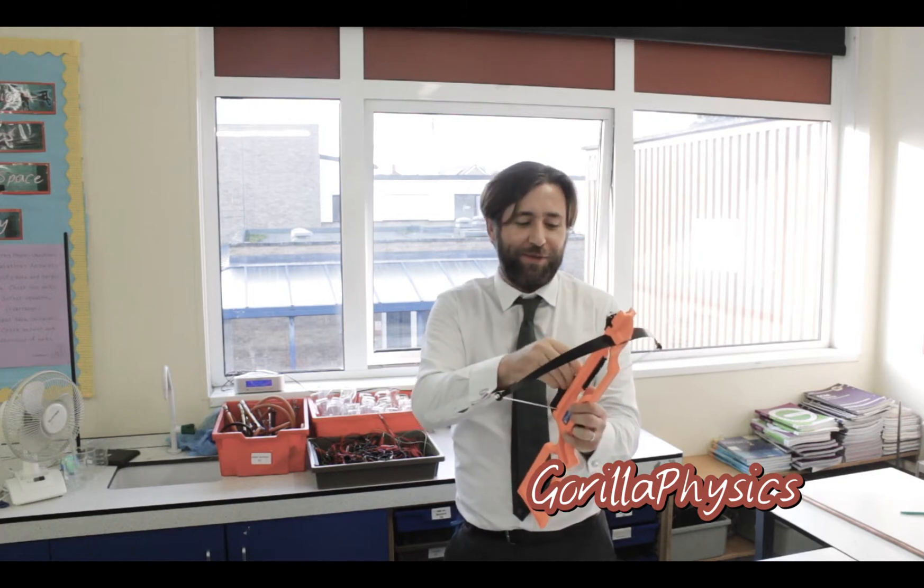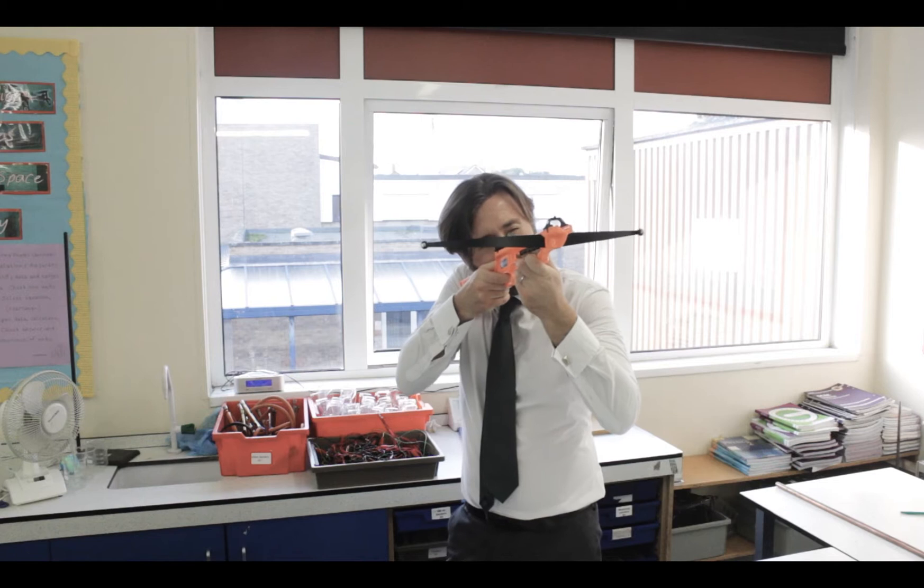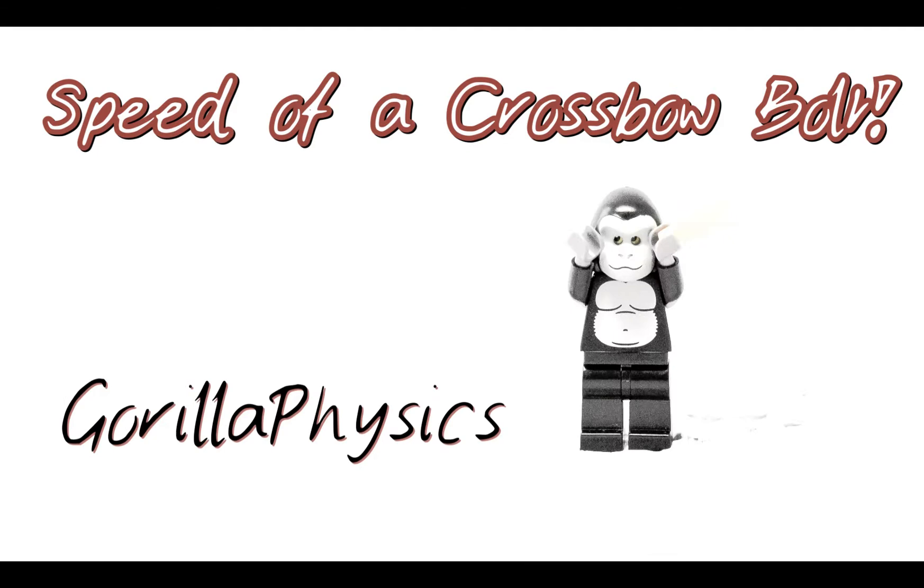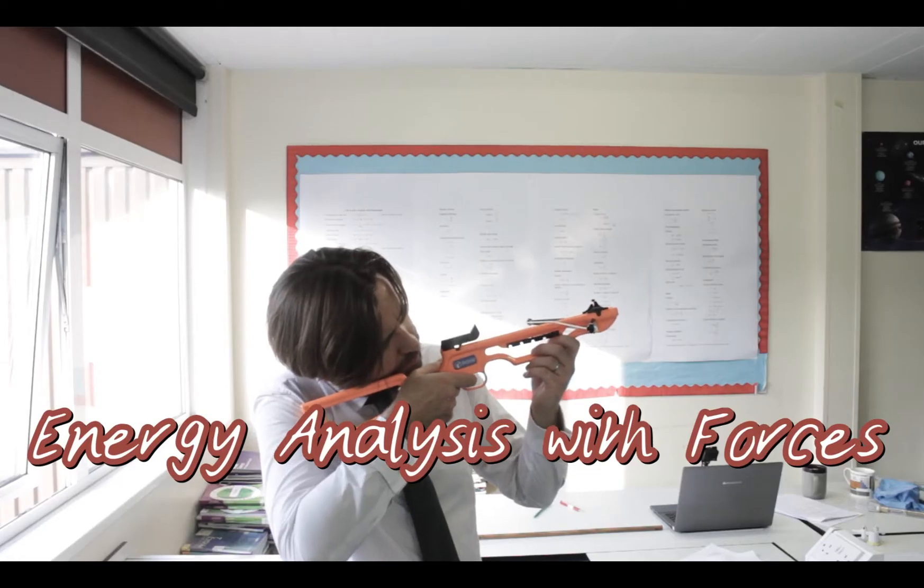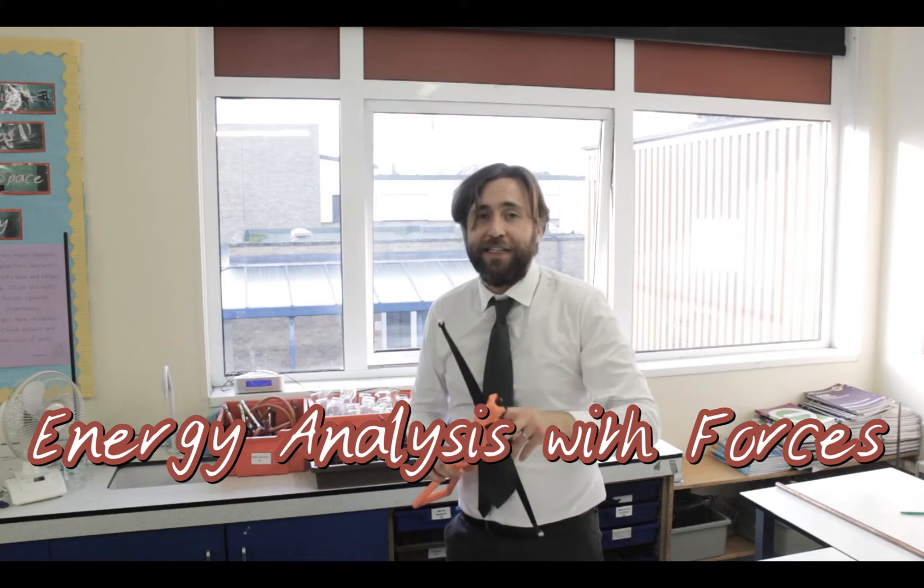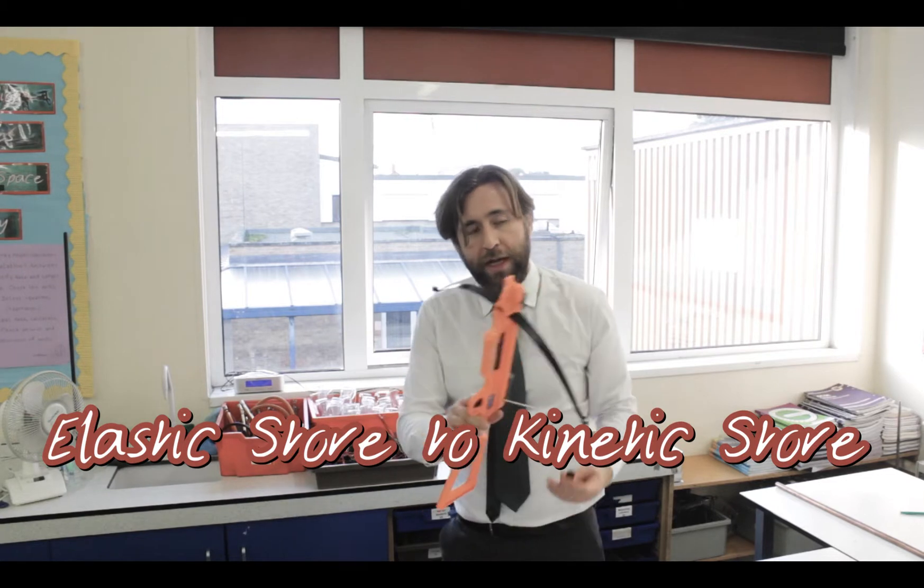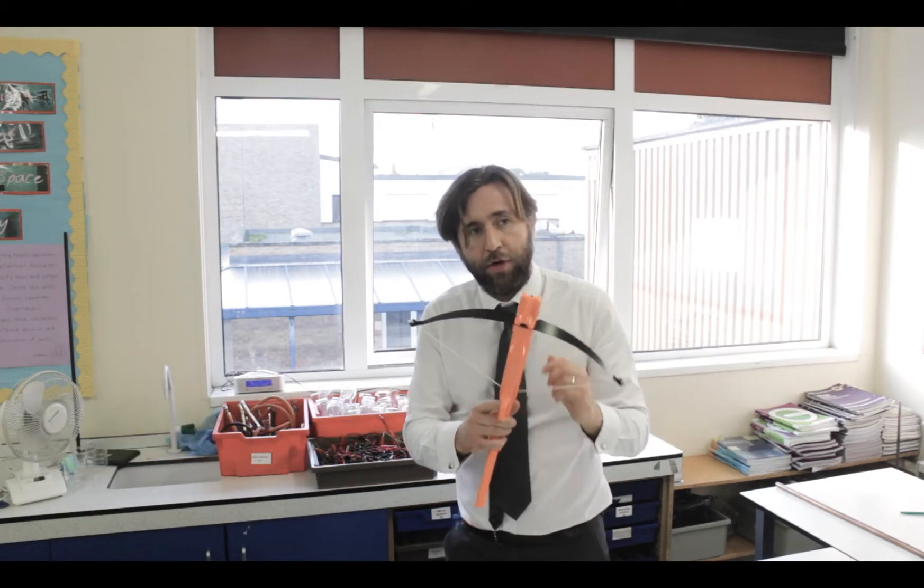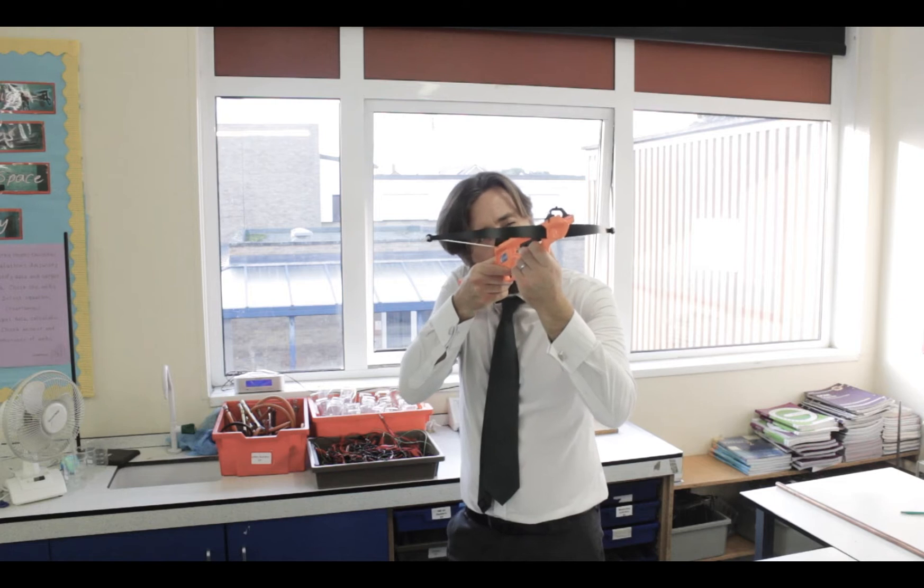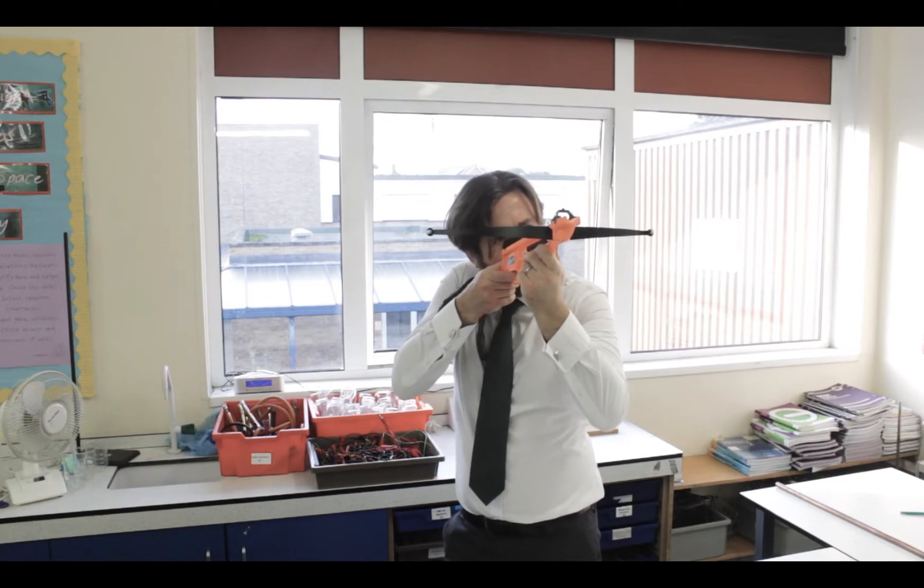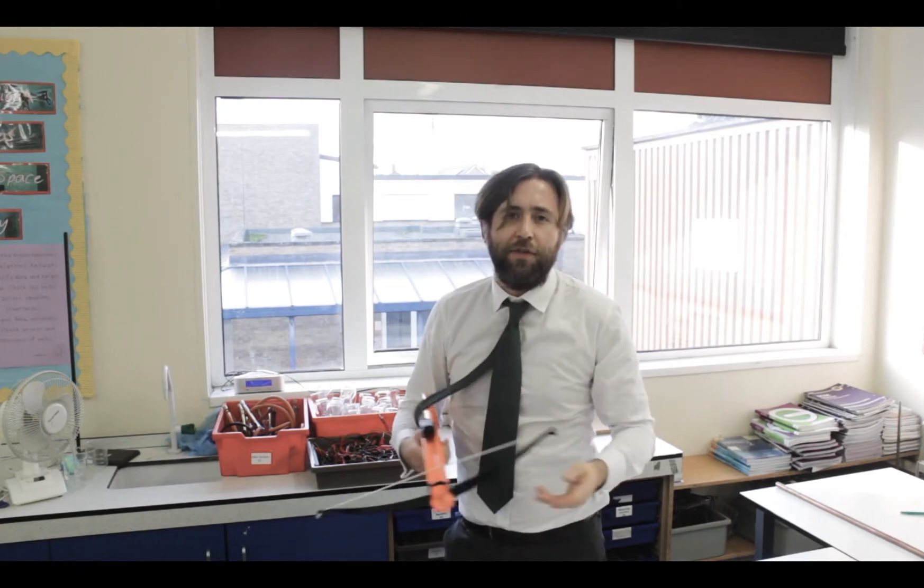I'm going to use energy analysis to work out the speed of this dart fired from this crossbow. First thing to think about when you're doing energy analysis is think about your stores. I'm starting here with an elastic energy store and I'm converting that by the law of conservation of energy into a kinetic store. Once you've got your two stores worked out, get the equations ready and do the analysis.